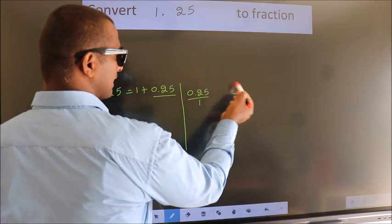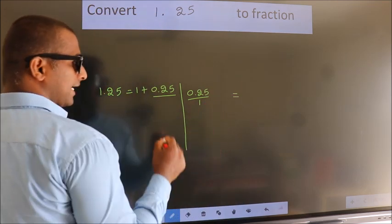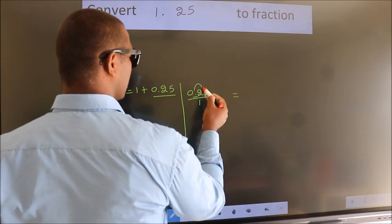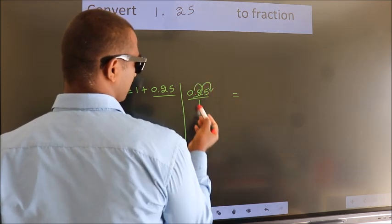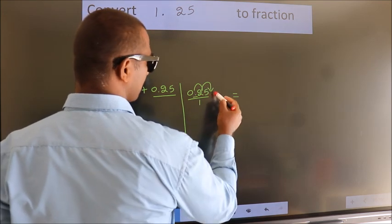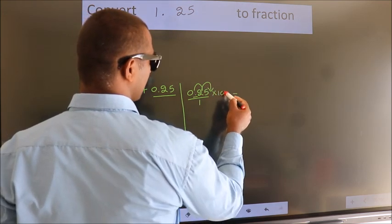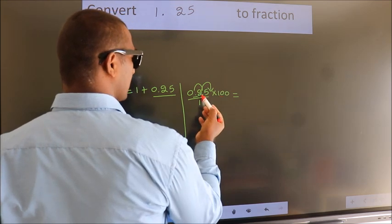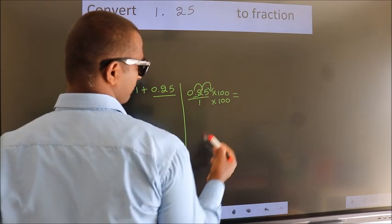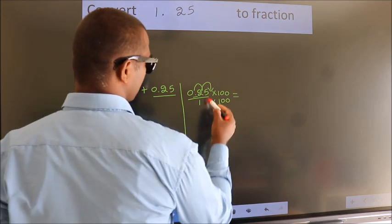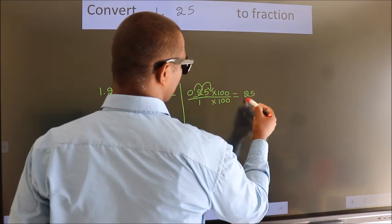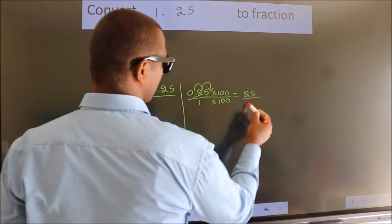To convert 0.25 to a fraction, we have to move the decimal after 2 numbers. To move the decimal after 2 numbers, we multiply it by 100. Whatever we do in the numerator, in the denominator we should do the same. So 0.25 into 100 gives 25, and 1 into 100 gives 100.